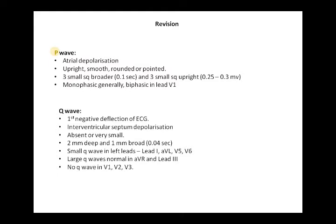The Q wave is the first negative deflection of ECG and occurs because of interventricular septum depolarization. It is generally absent, or if present it is small — just 2 mm negatively deflected and 1 mm (0.04 seconds) broad. Smaller Q waves may be present in V4, V5, V6, lead 1, and AVL — the left-side leads. Larger Q waves, more than 2 mm in depth, are generally not present; if they are, they signify ischemia or infarction. However, in lead 3 and AVR, larger Q waves may normally be present. There are no Q waves in V1, V2, and V3.